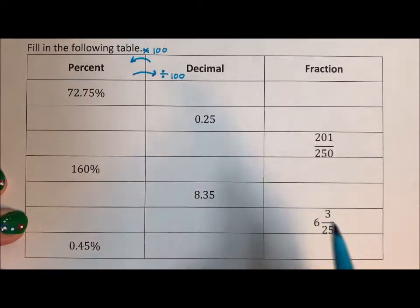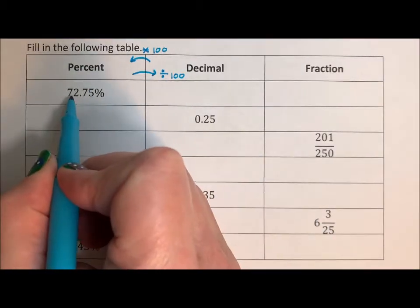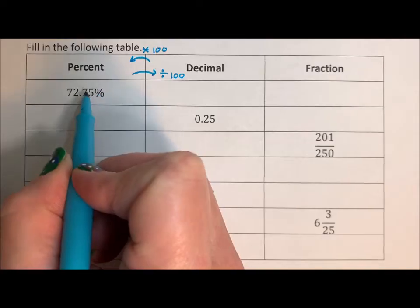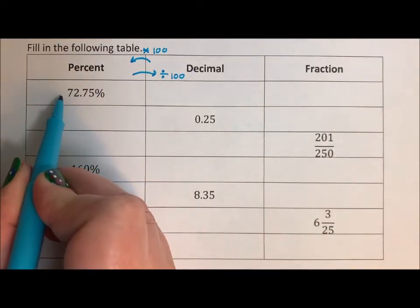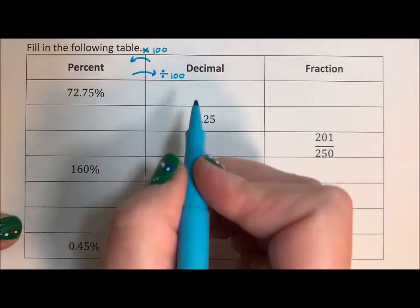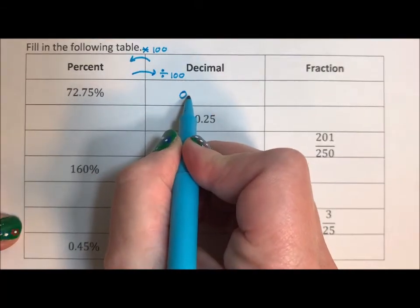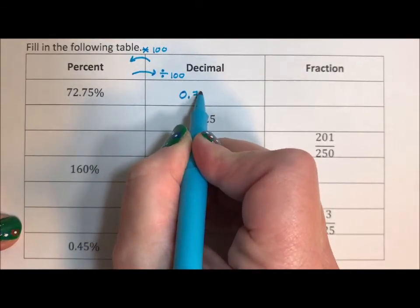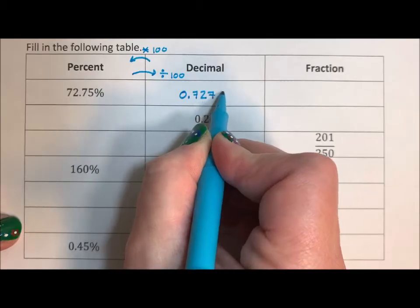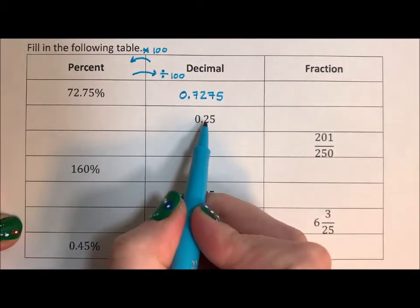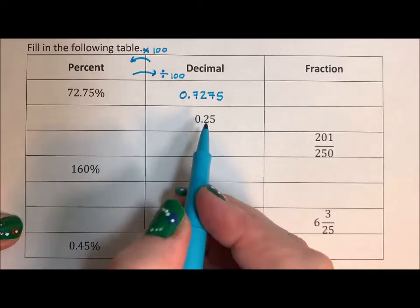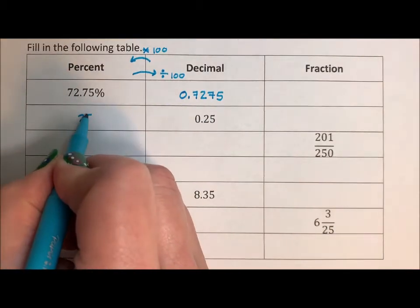So if the percent is 72.75%, if we divide by 100, that means we're bringing our decimal point back two places. This becomes 0.7275. If the decimal is 0.25, if we multiply by 100, this becomes 25%.